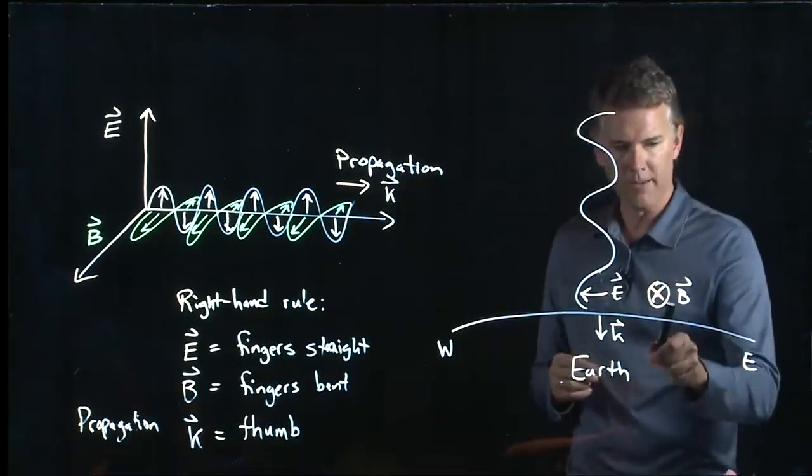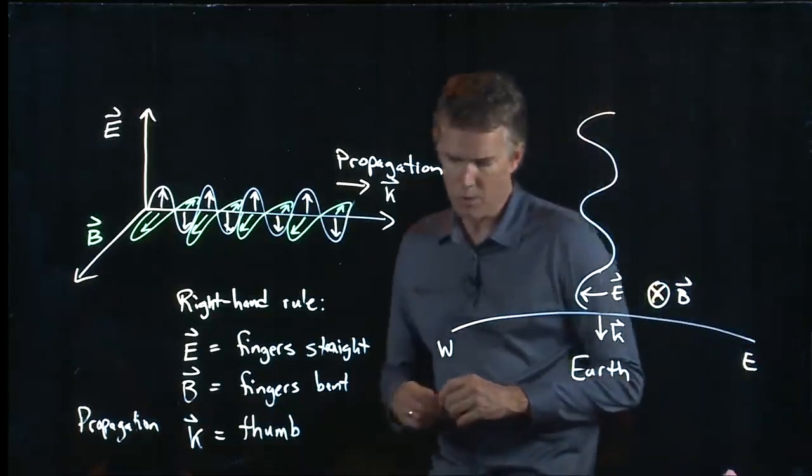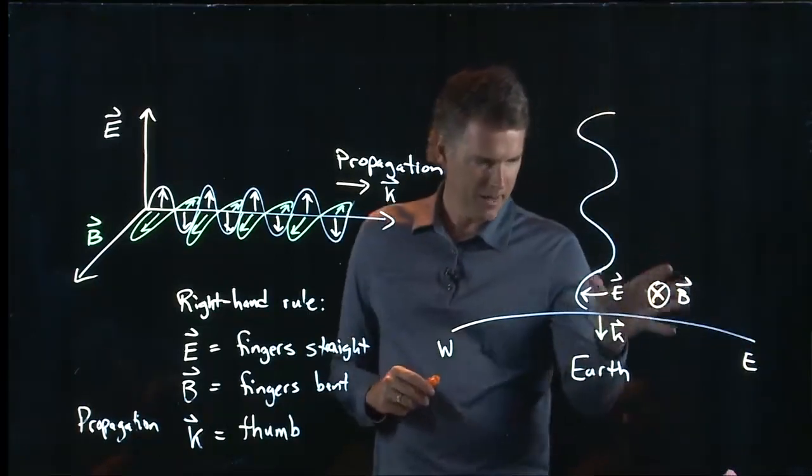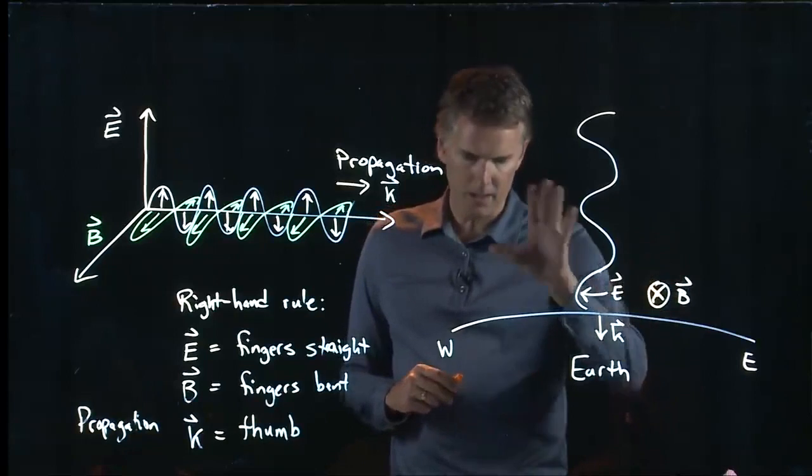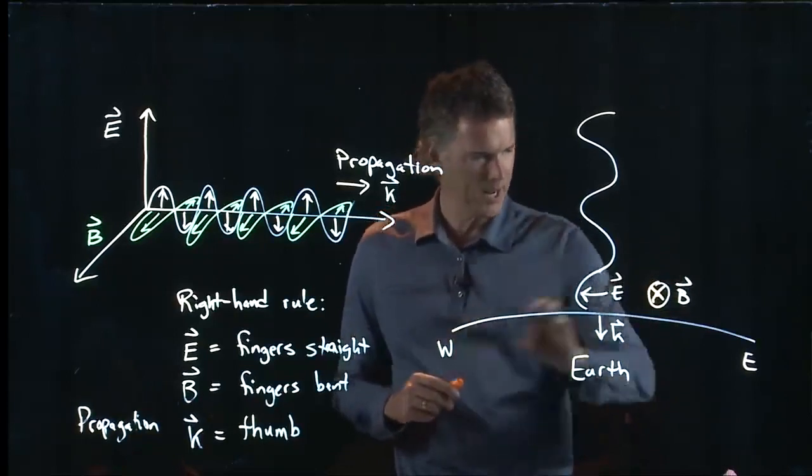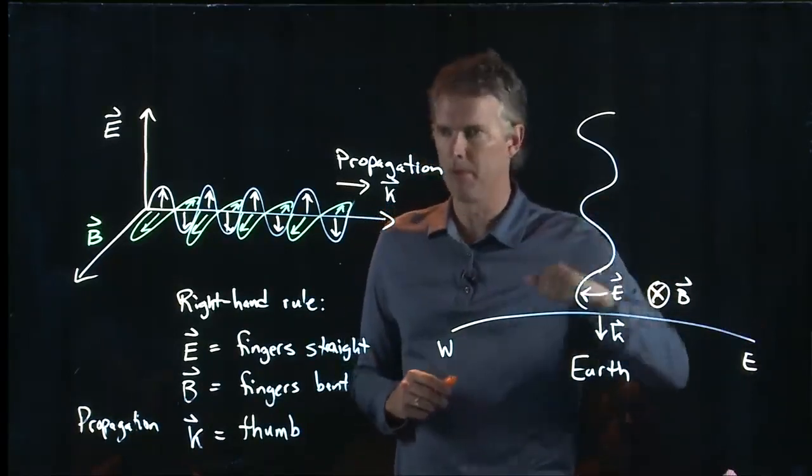So B field is, in fact, in the north direction. I might have tweaked this up a little bit. But the important point is we can eliminate west and east, up and down.